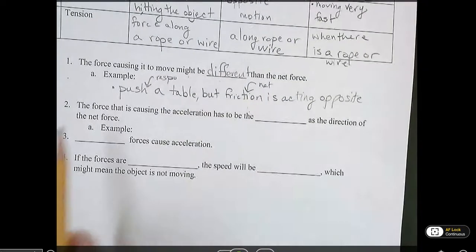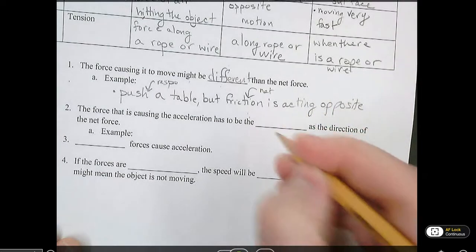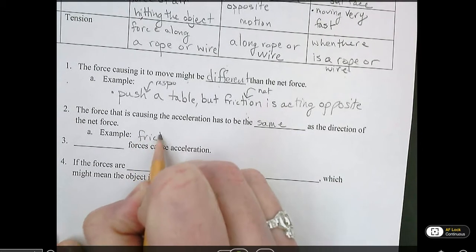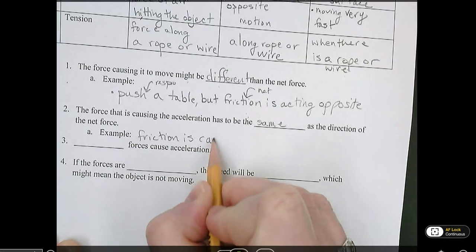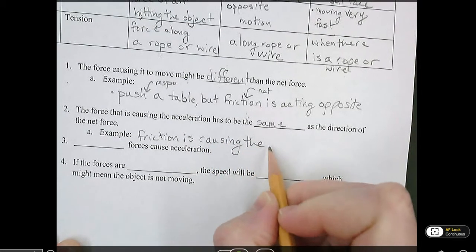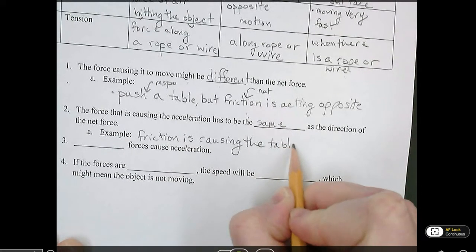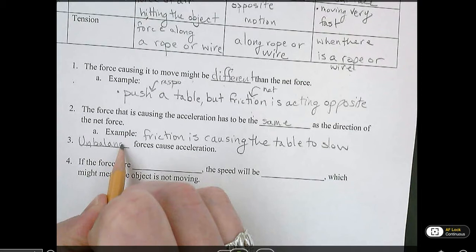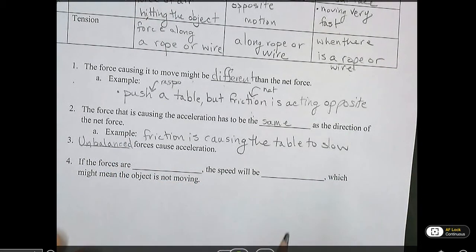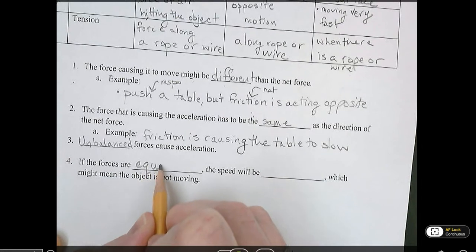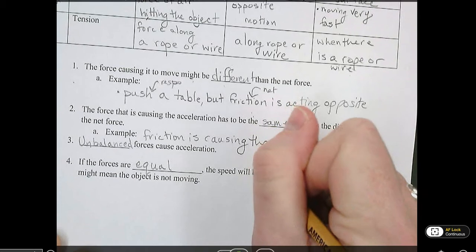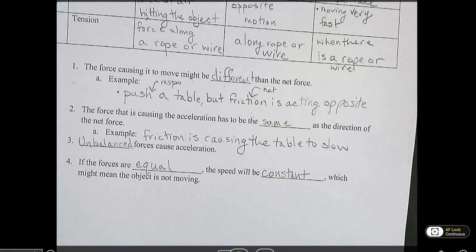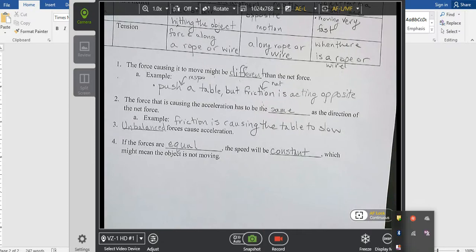Now, that's different than in number two. The force that is causing the acceleration has to be the same as the direction of the net force. The example would be friction is causing the table to slow. Number three, unbalanced forces or unequal forces cause acceleration. And number four, if the forces are equal, the speed will be constant or unchanging, which might mean the object is not moving. We're going to go ahead and flip to the back. I'm going to pause really quickly.